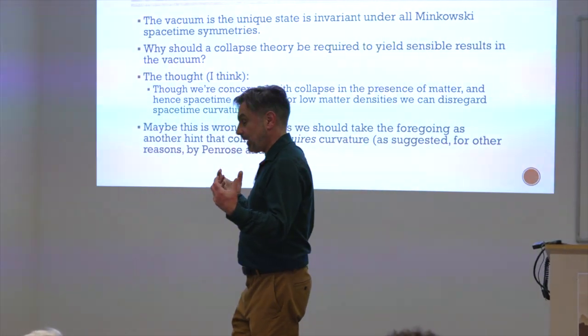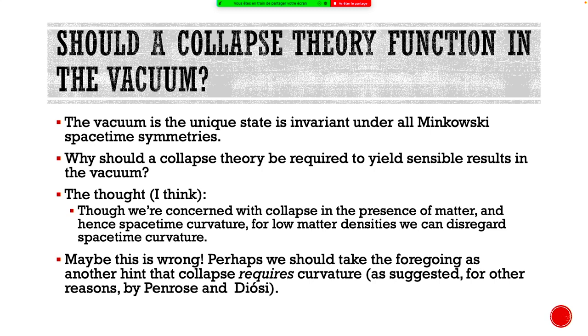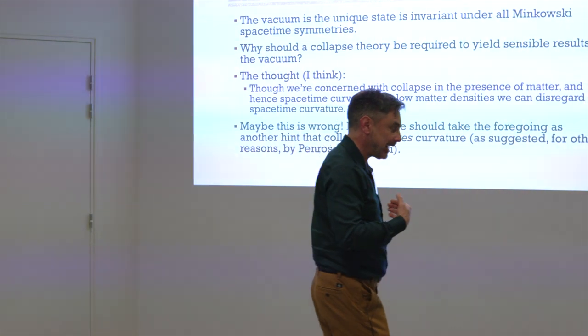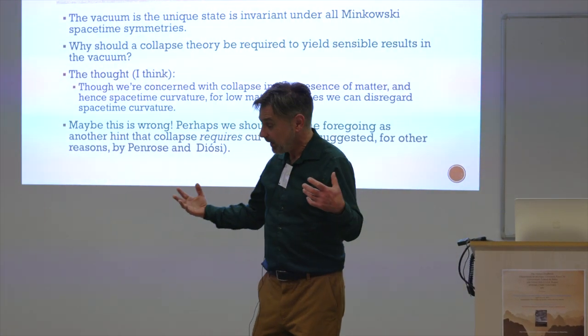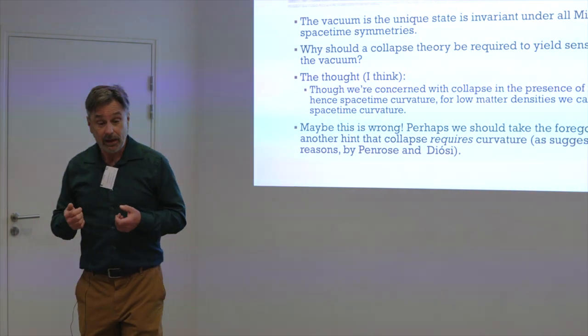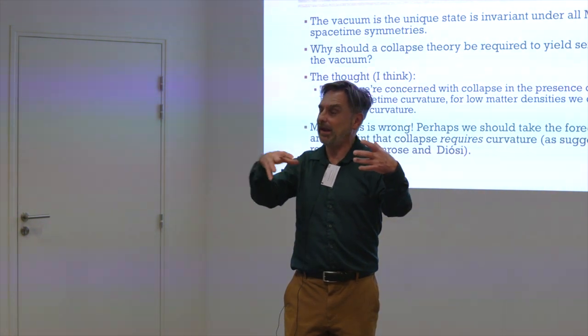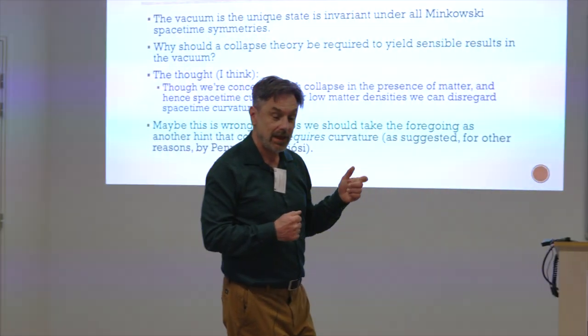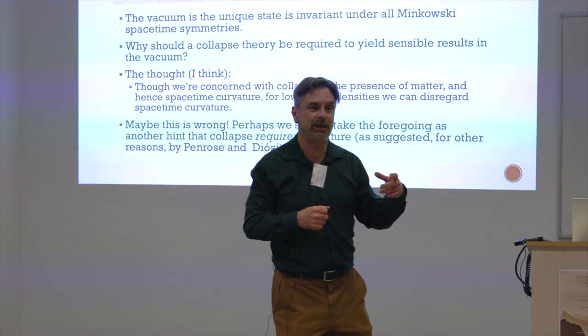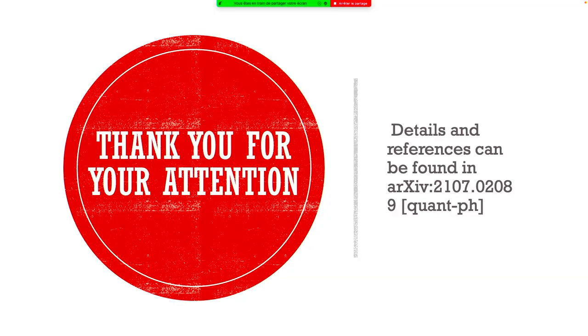But maybe that's wrong. And something I've been recently thinking about is that maybe this kind of result, maybe this sort of problem that people ran into when trying to do a relativistic version of CSL, is a hint from another direction that collapse actually shouldn't work in Minkowski spacetime. The collapse requires curvature. And it might be a hint that something like these proposals by Diósi and Penrose, who came from a very different perspective, are on the right track. And I think that when you get similar conclusions from different kinds of perspectives, that's sort of a clue that you maybe are on the right track. Thank you.